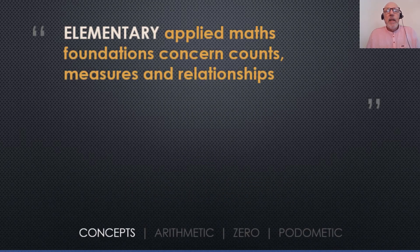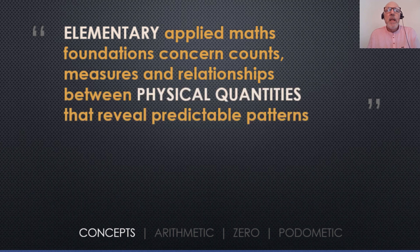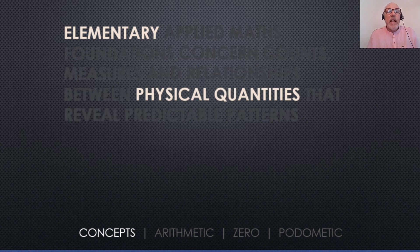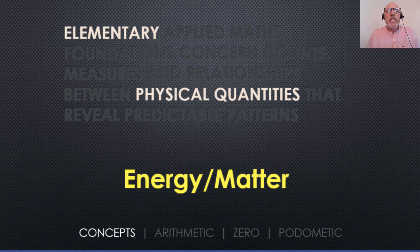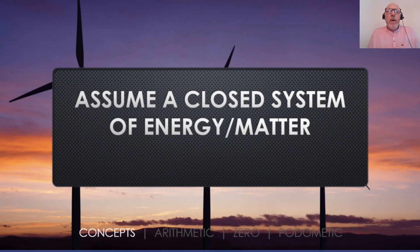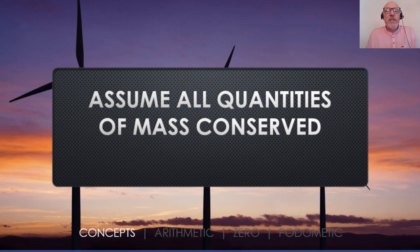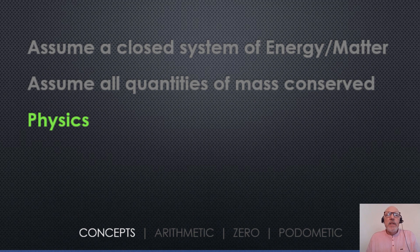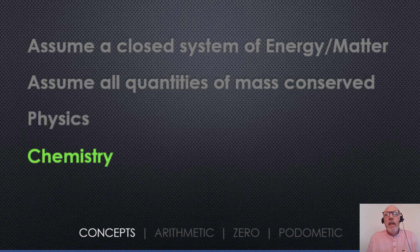In terms of the concepts and the way I discuss things, elementary applied maths foundations concern counts, measures and relationships between physical quantities that reveal predictable patterns. Those elementary physical quantities are energy and matter. In my mathematical framework for reviving zero in a symmetric form, I assume a closed system of energy and matter, and I assume all quantities of mass are conserved. This is the structure that supports research in physics and chemistry.